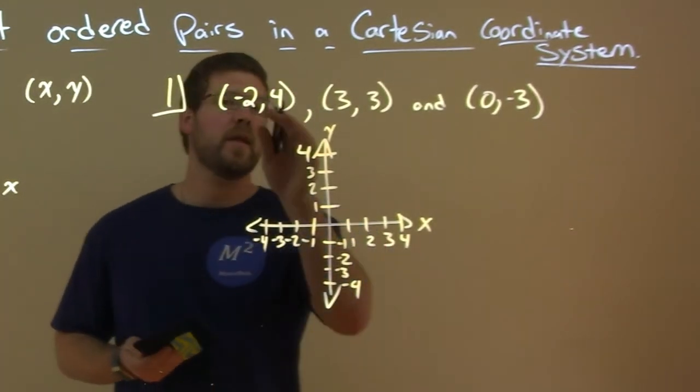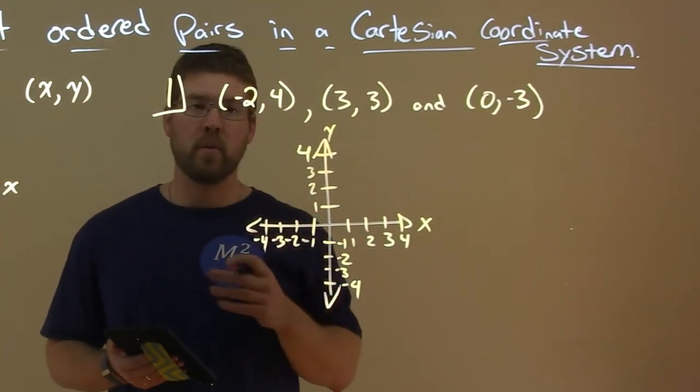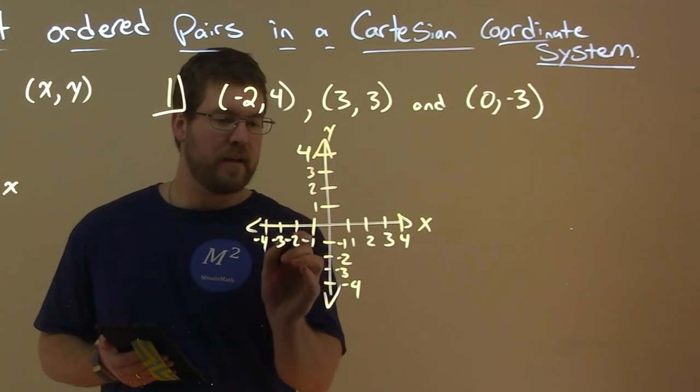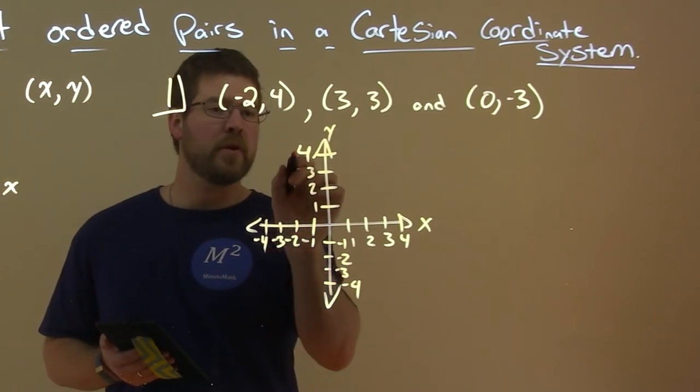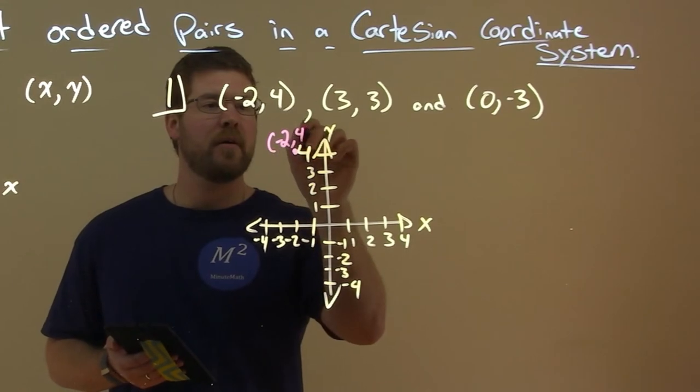The first point here is negative 2 comma 4. Negative 2 is the x distance from the origin, so x is negative 2 right here. Then we go up 4 units right there, and that gives us our point negative 2 comma 4.